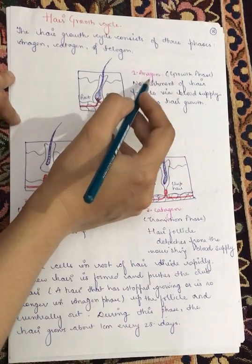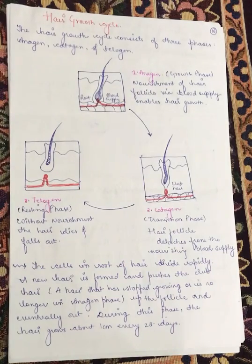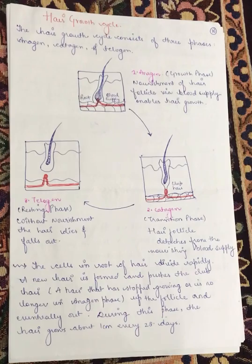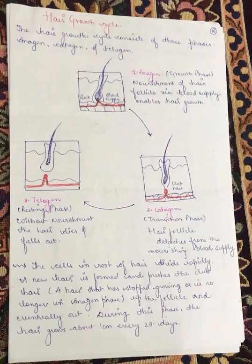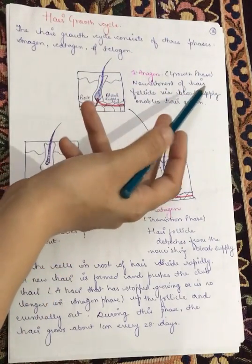The first phase is the growth phase, called anagen. When our hair falls, we may feel panic, but a limited amount of hair fall is normal. Hair goes through its cycle, ages, becomes dead, and falls off to be replaced by new hair. If there is excessive hair fall, however, that is not normal and requires action.